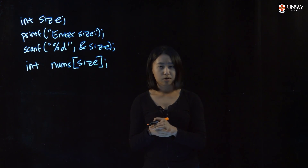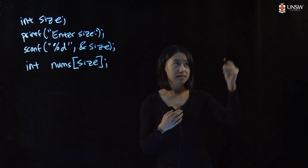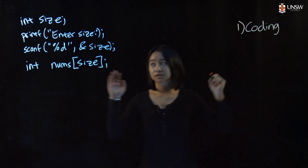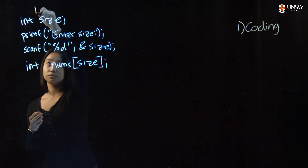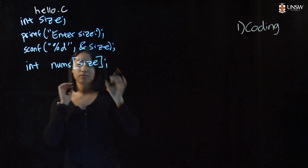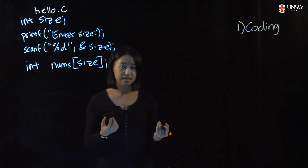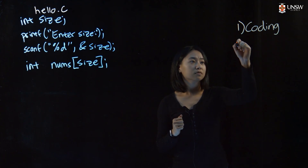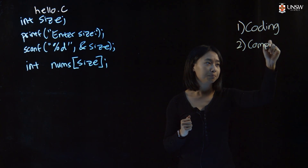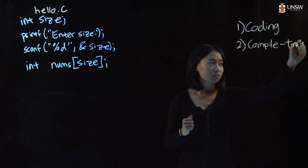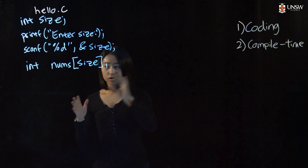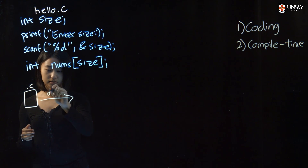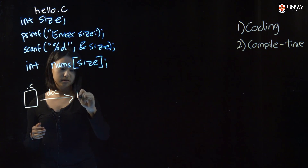So when we code and we make a program, when we run a program, there are three basic phases. The first is coding — that's what we did here. This lives in your .c file, maybe something like hello.c, and we write down all of our instructions in C for running our program. After that, we enter compile time. This is where you take your .c program, you run it through your compiler called DCC, and it creates an executable for you.